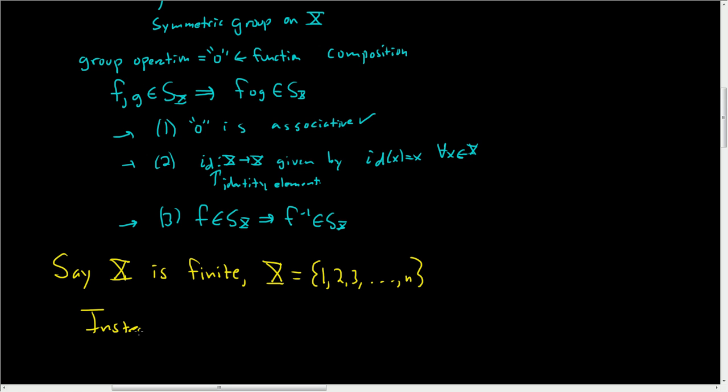So 1, 2, 3, dot dot dot, n. In this case, instead of writing S sub X, we write S sub n. This is typically what you see in most algebra books. In this case we give it a new name: the symmetric group of degree n.